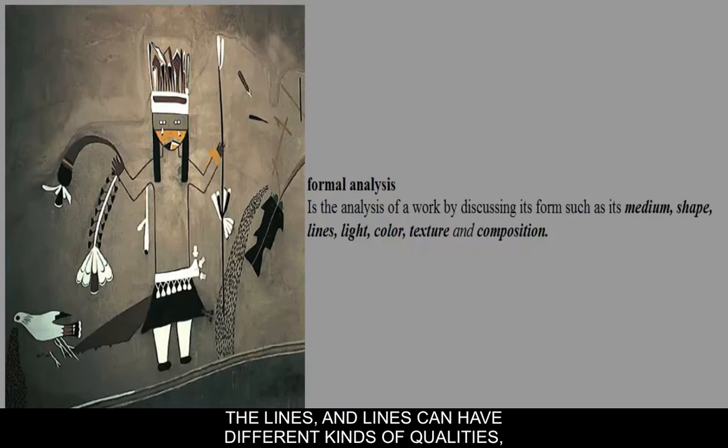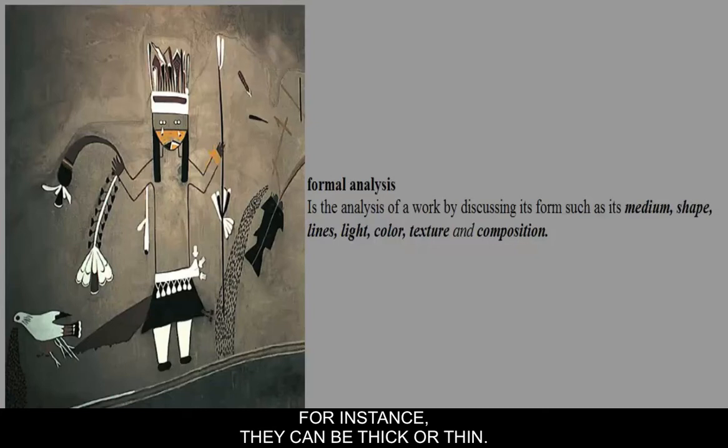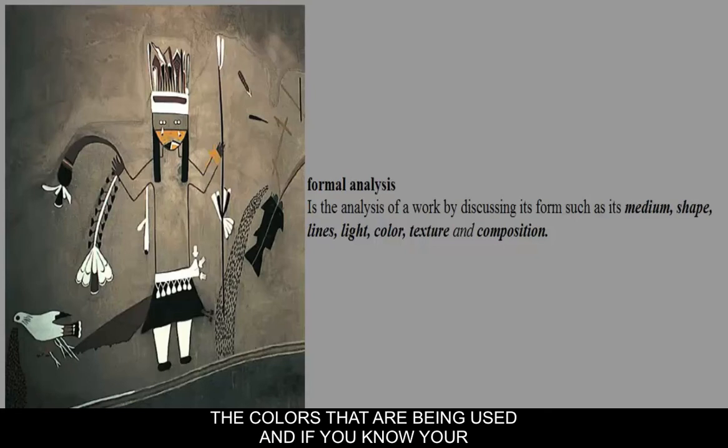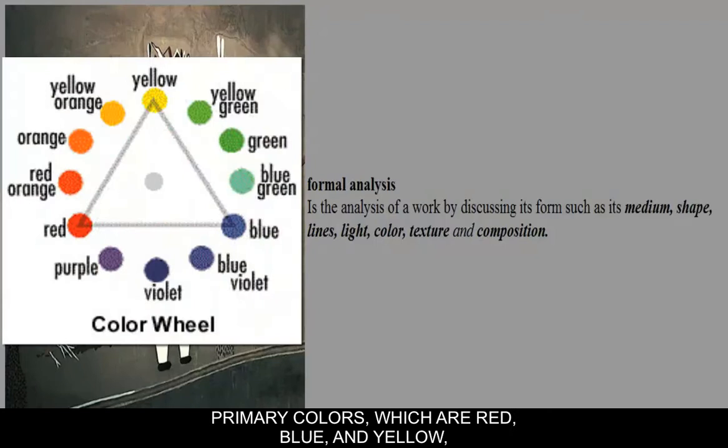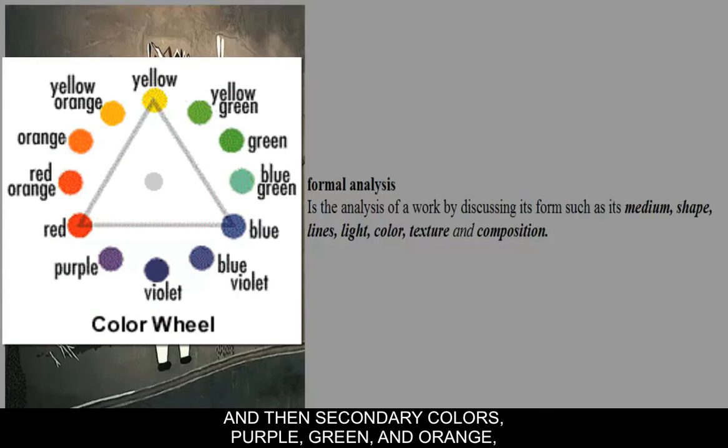Lines can have different qualities — they can be thick or thin, long or short. Then there are the colors being used. If you know your color wheel, there are three levels of color: primary colors, which are red, blue, and yellow; secondary colors — purple, green, and orange; and a third, tertiary level, which are browns.